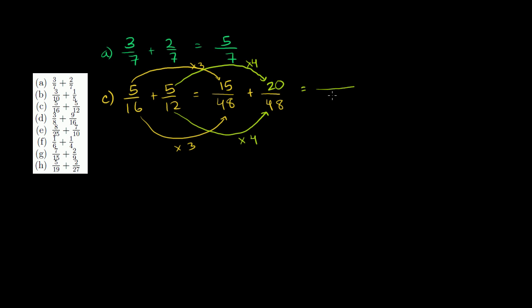So this is going to be equal to, our denominator is 48. And so we can add 15 plus 20, which is 35. And can we reduce this? Let's see, 5 does not go into 48. 7 does not go into 48. Looks like we're all done. Let's do E right there.